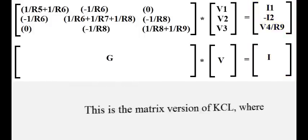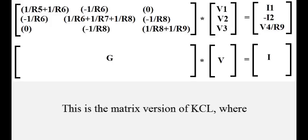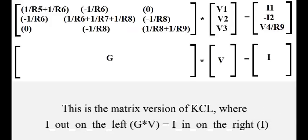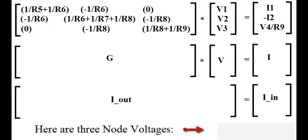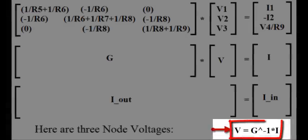This is the matrix version of Kirchhoff's current law, where I out on the left equals G times V, and I in on the right equals I, or current out equals current in. Therefore, G times V equals I, and solving for V, here are the three node voltages. G inverse times I.